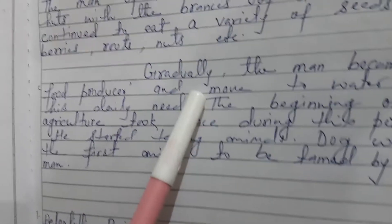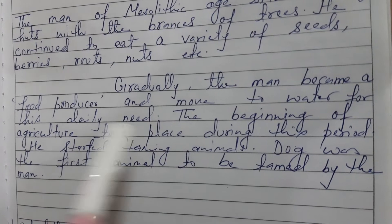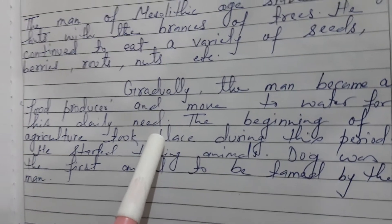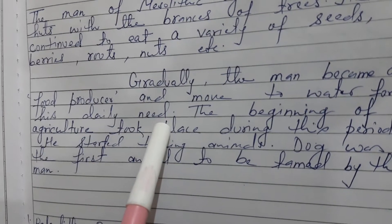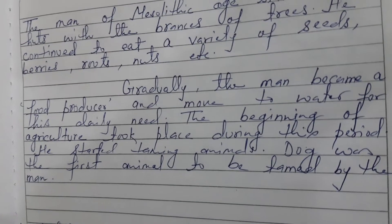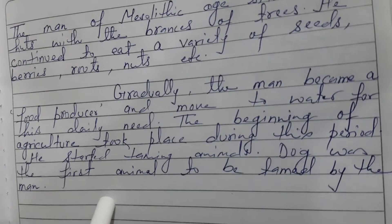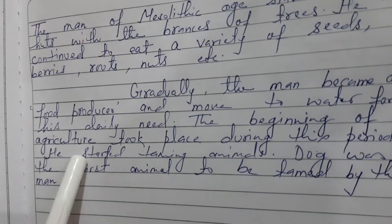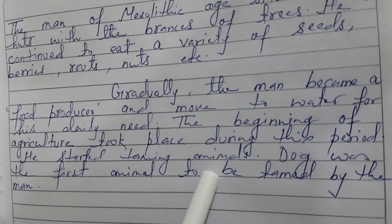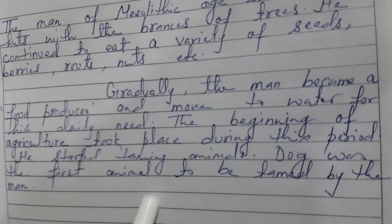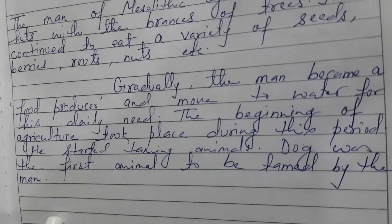Gradually, man became a food producer and moved near water for his daily needs. They started shifting agriculture. The beginning of agriculture took place during this period. He also started taming animals, and the dog was the first animal to be tamed by man.